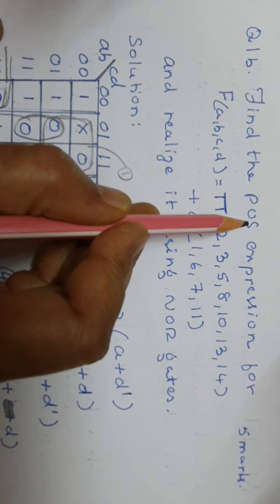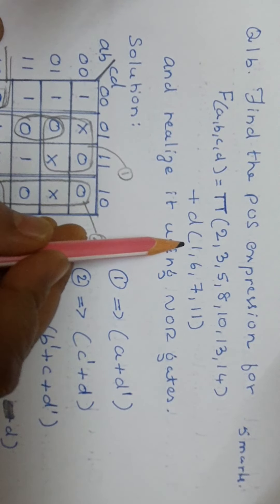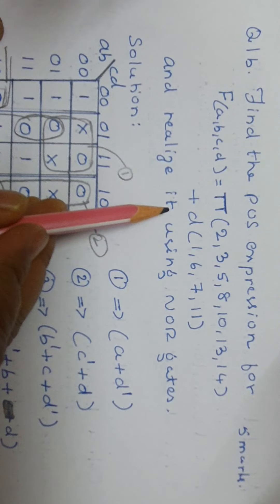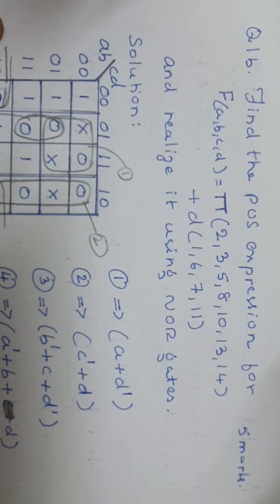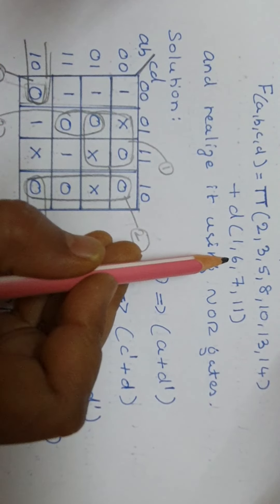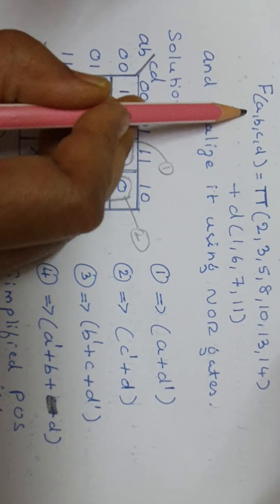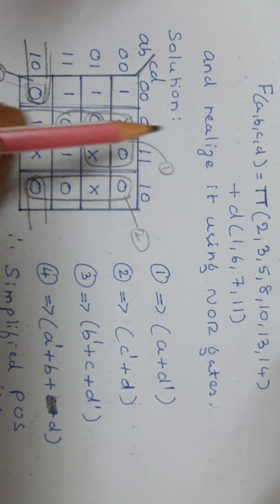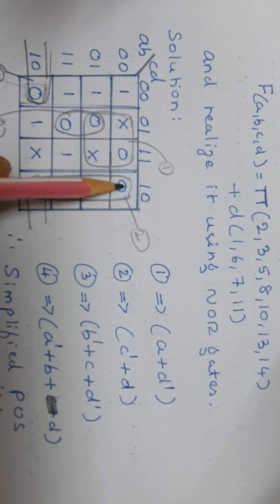For product of sums, to get simplified product of sums we will have to fill zeros, then don't care conditions, and then make groups of zeros. As per the given function, a K-map has to be drawn because 4 variables are there. 2 raised to 4 equals 16 squares are drawn in the K-map. The 4 variables A, B, C, D — out of 4, A and B are written on one side, and C and D on the other.